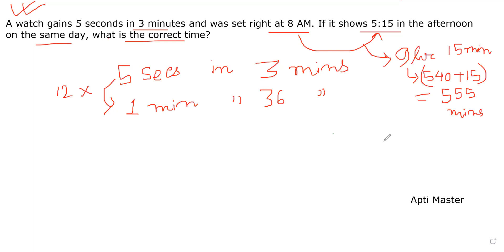When the incorrect watch moves for 36 plus 1 equals 37 minutes, that means the correct watch moves for 36 minutes. So 37 is incorrect and 36 is correct. Incorrect 37 minutes means correct 36 minutes.